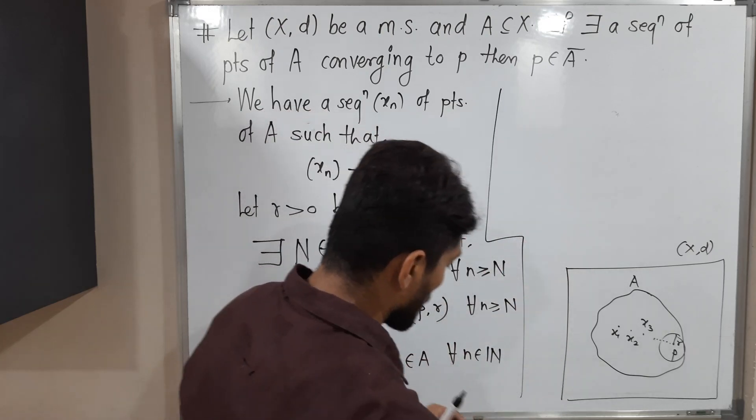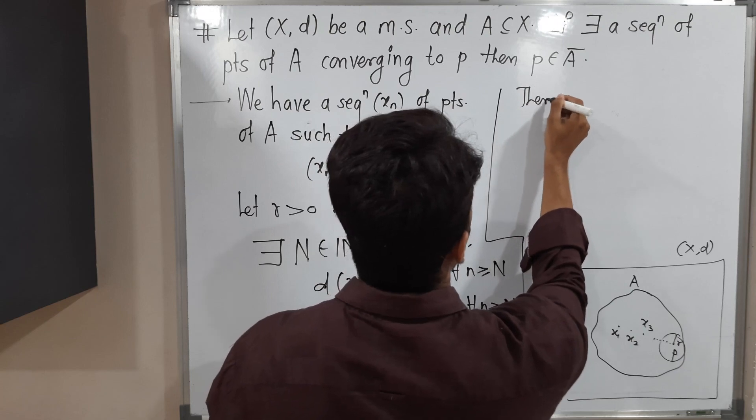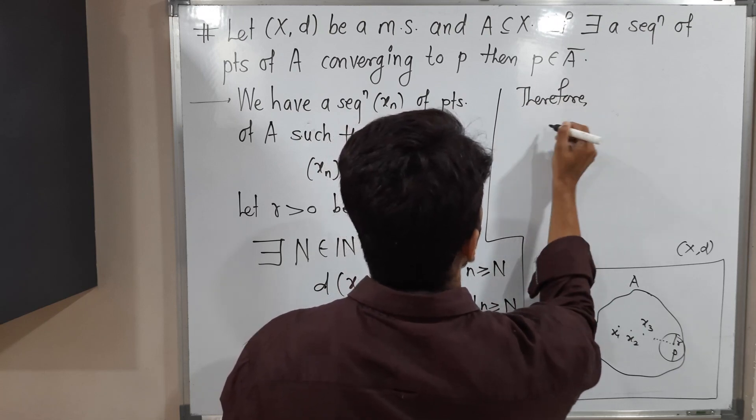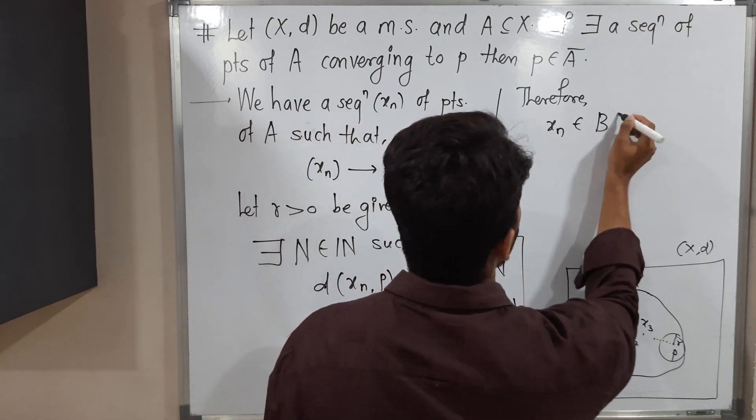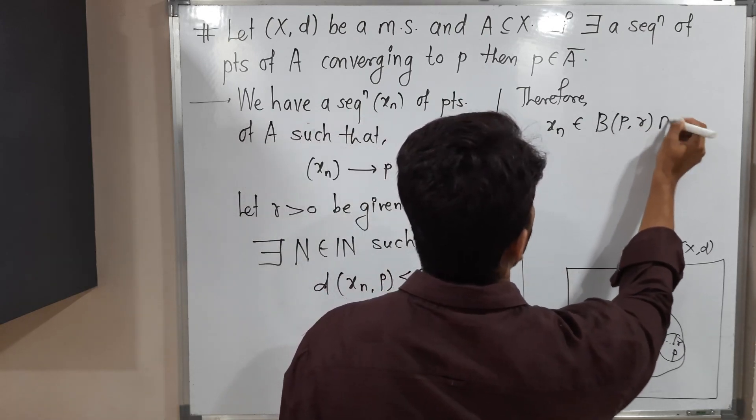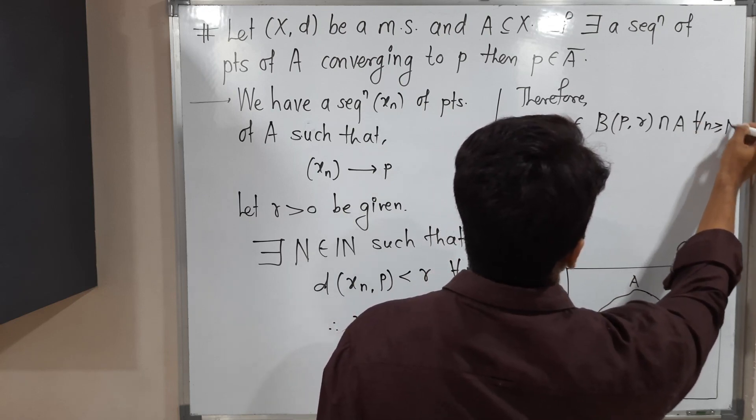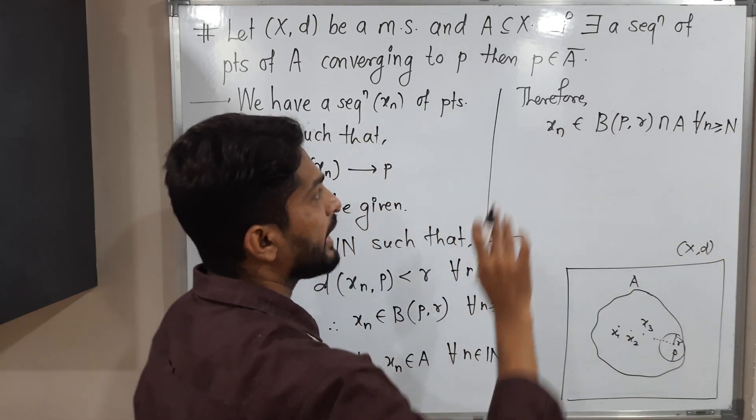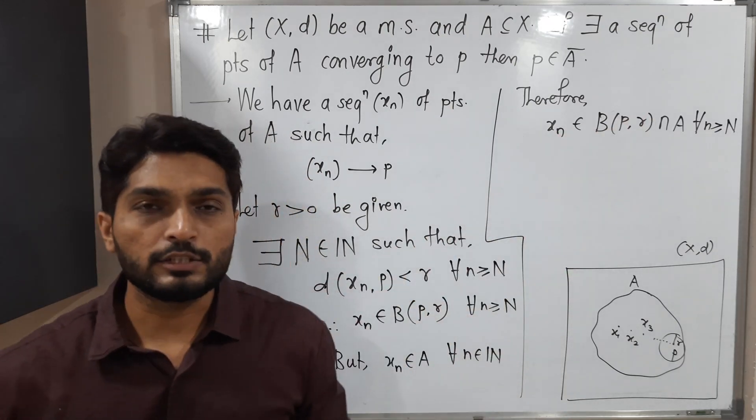Therefore, xn belongs to B(P,R) intersection A for all n greater than or equal to capital N. This restriction should be added there. So all these points lie in the intersection.